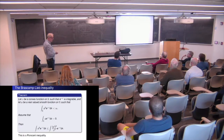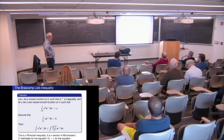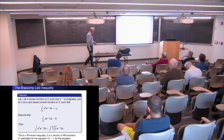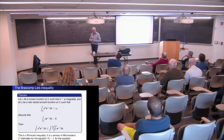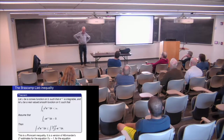This is a Poincaré inequality: you estimate the function by its derivative, ruling out constants with the mean-zero condition. The key point is that it is actually a version of Hörmander's L^2 estimate for the D-bar equation — but now it's the equation U'(x) = f on the real line. If you decide to use L^2 techniques to study this simplest differential equation in the world, you might arrive at the Brascamp-Lieb inequality. This is the real-variable version of Hörmander's theorem.